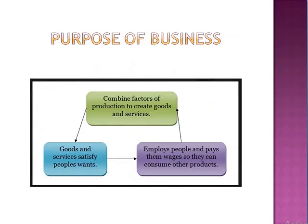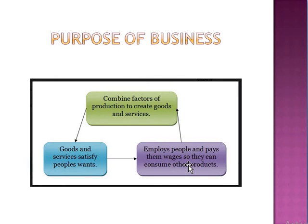Let's look at the purpose of business. Business is operated mainly with three purposes: first, to combine factors of production to create goods and services — combining raw materials, minerals, land, labor, machinery, etc. Second, to make goods and services to satisfy people's wants. Third, to employ workers and pay them wages so they can consume other goods or products. Whenever I am employing a laborer, I have to pay him something in return — we may call it salary or income, but the proper term is wage, paid based on how many hours a laborer is working.